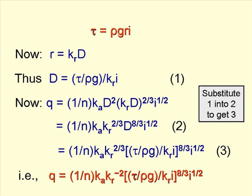q equals one over n, times k_a, times k_r to the power minus two, times τ over ρg divided by k_r i, all to the power eight over three, times i to the power one half.